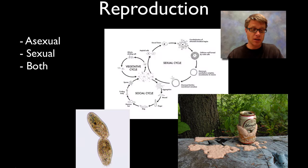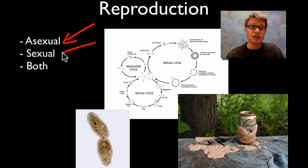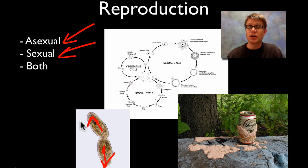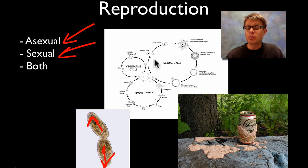How do they reproduce? Well, they have a bunch of diverse ways to reproduce. Some do it asexually, some do it sexually. This right here is a paramecium that's simply splitting in half — that's binary fission. But these paramecia will also have conjugation, where they come together and share bits of their genetic information. Some reproduce sexually and some do both.